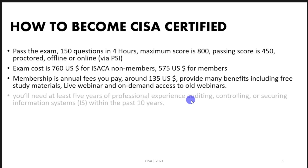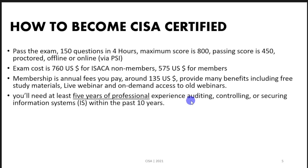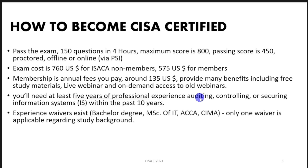After passing the exam, you need five years of professional experience in auditing, controlling, and securing information systems within the past ten years. You can have the experience before taking the exam and then apply, or you may be a fresh graduate and take the exam first — after passing, you have five years to obtain the required experience and apply for certification.